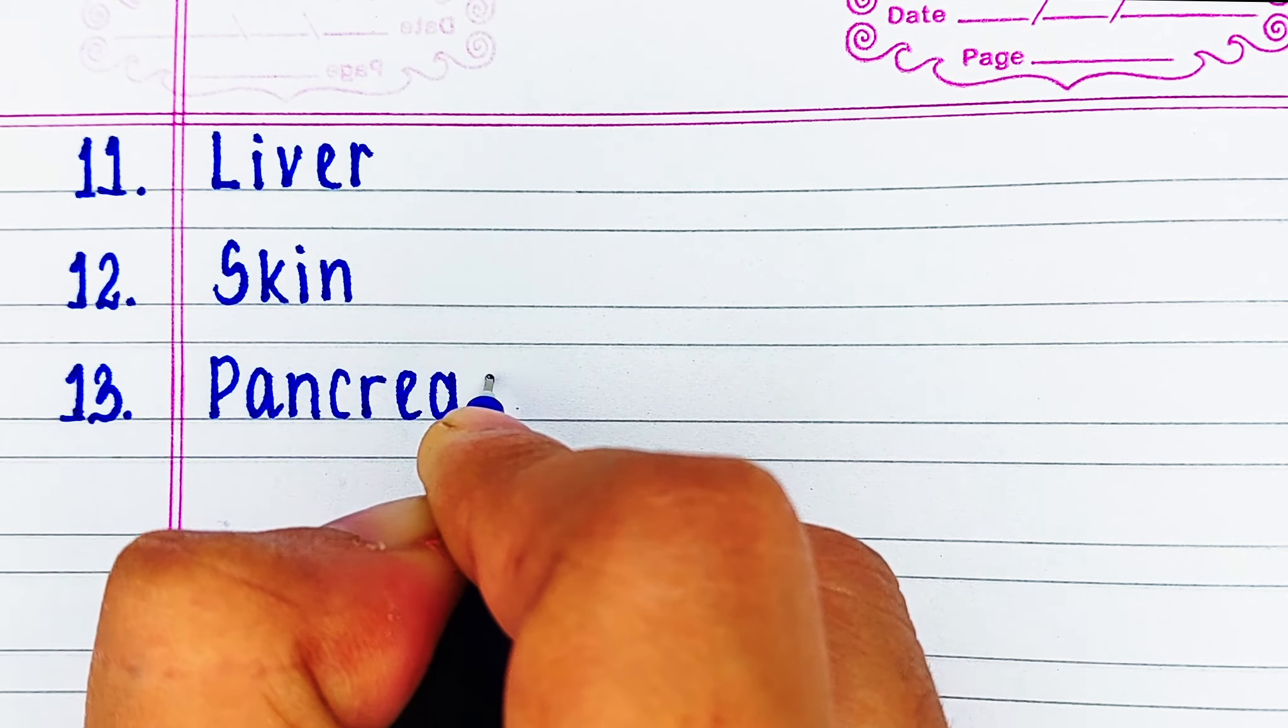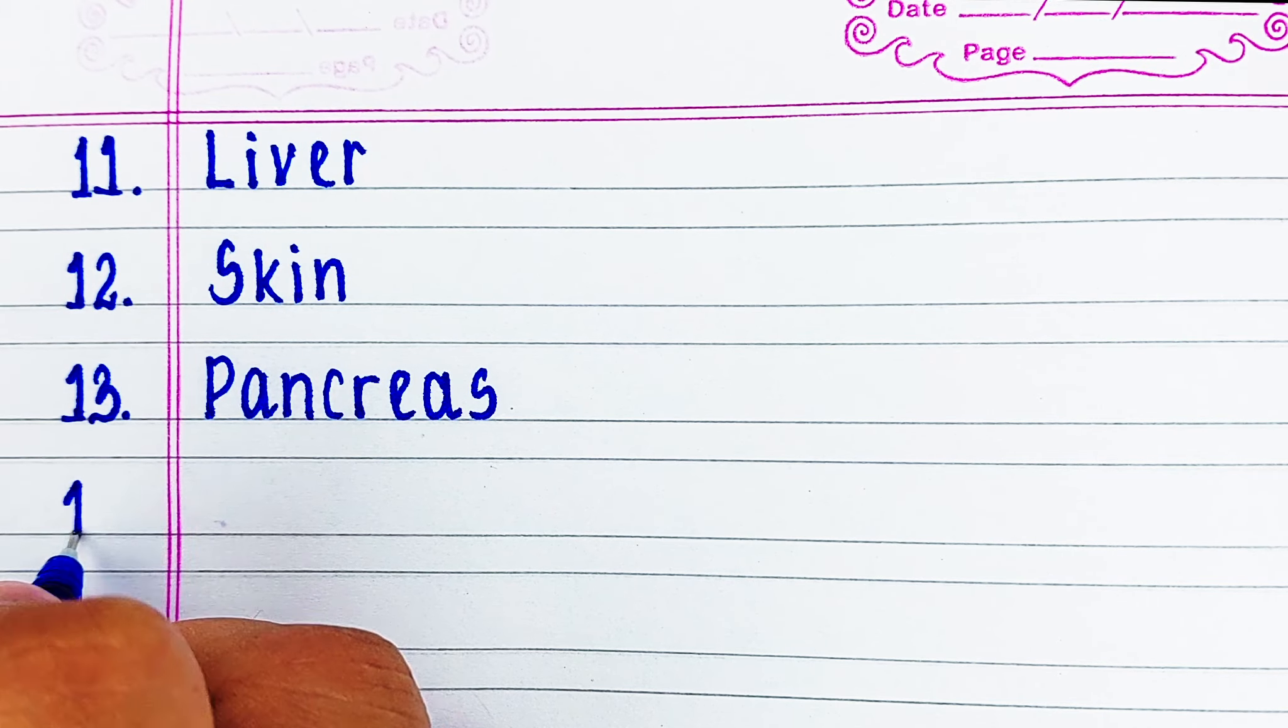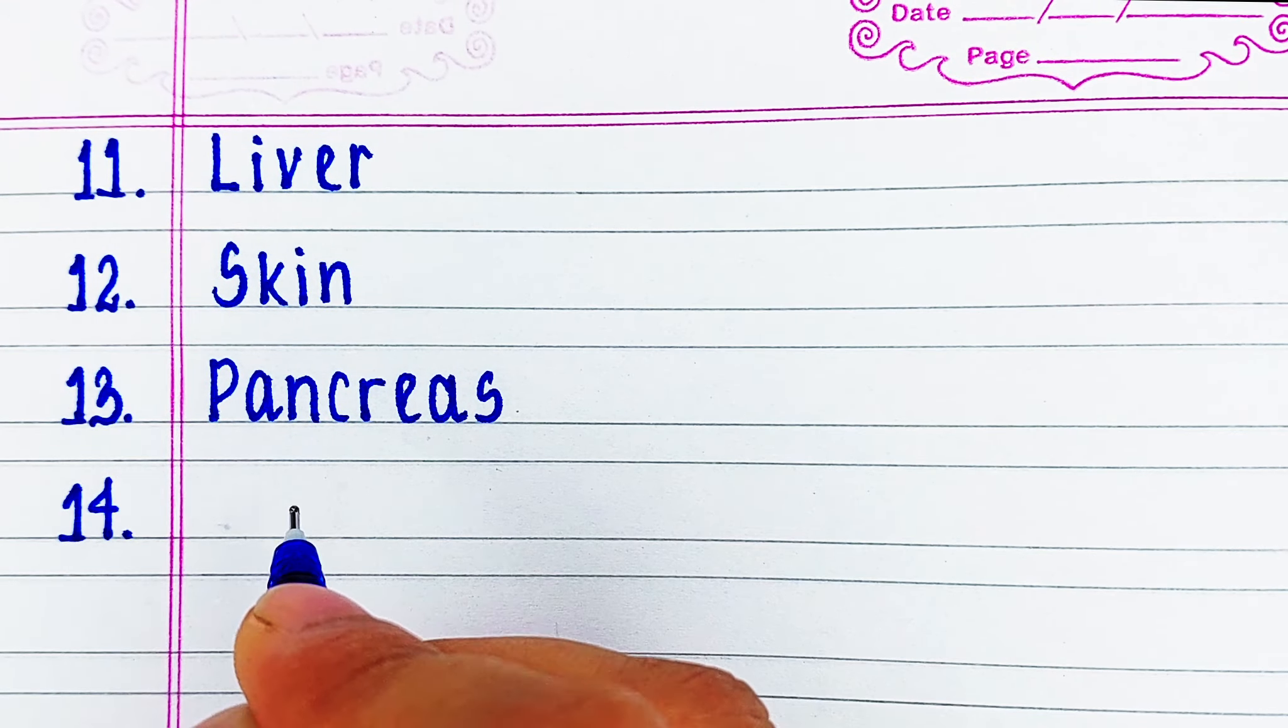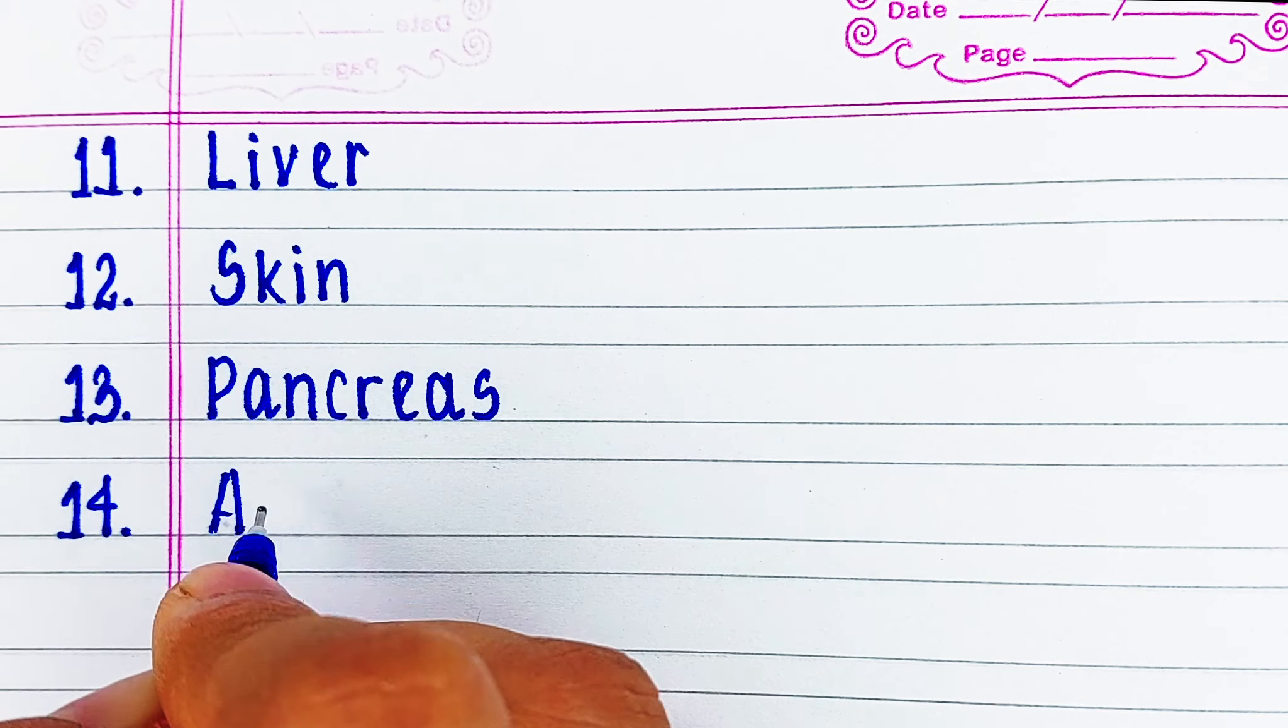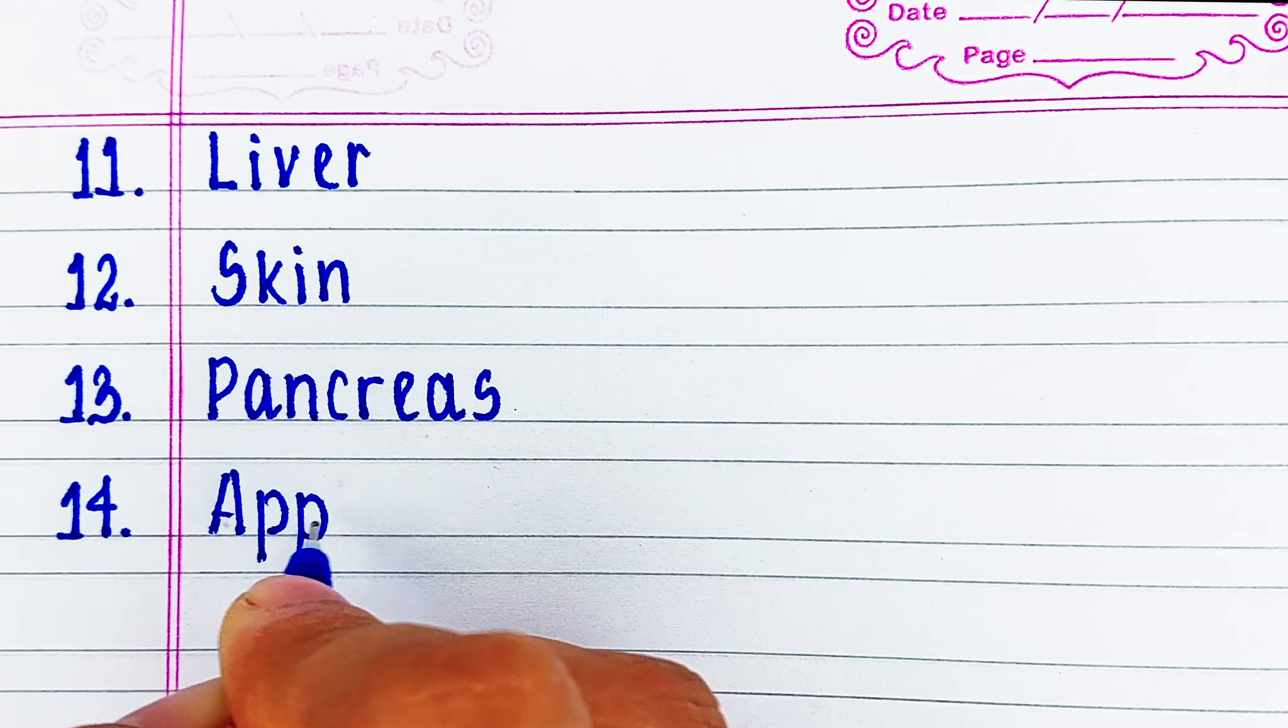Next organ is pancreas. This organ helps in digestion and also regulates our blood sugar level.